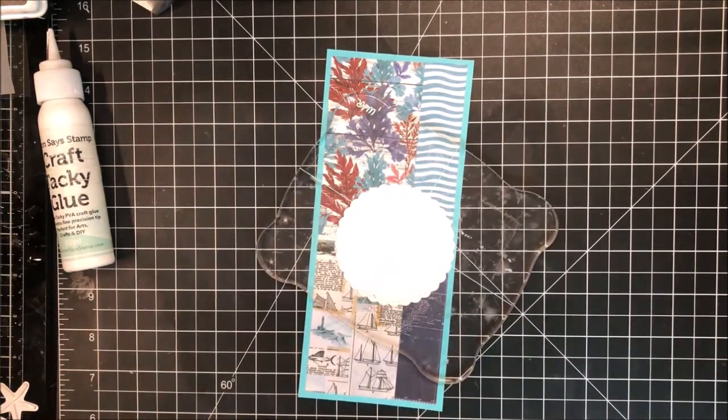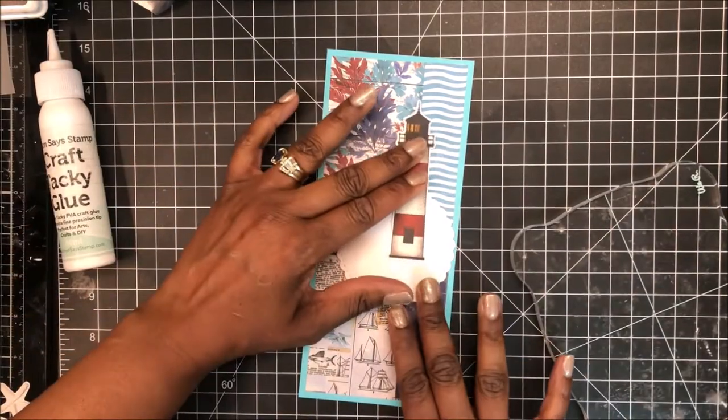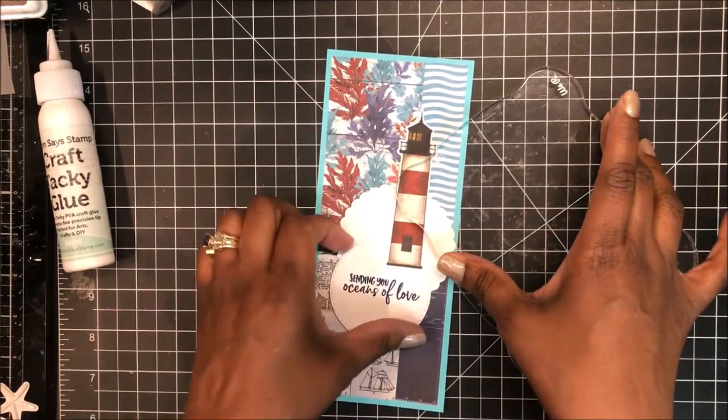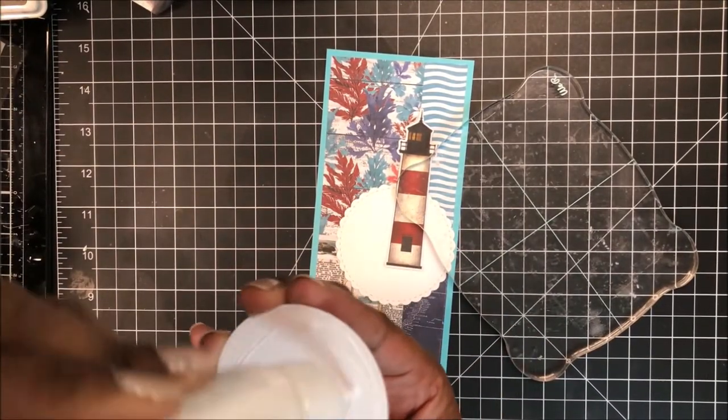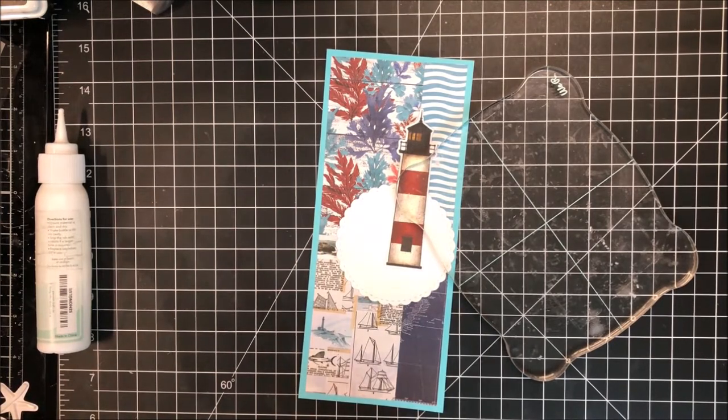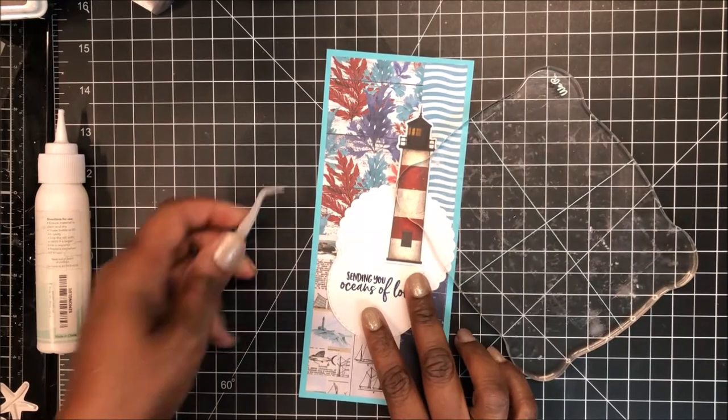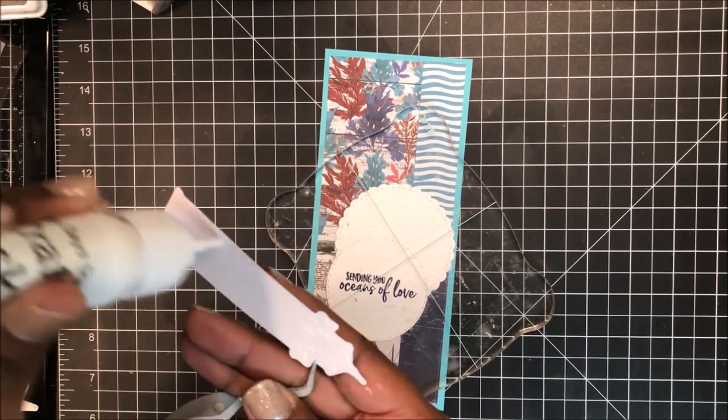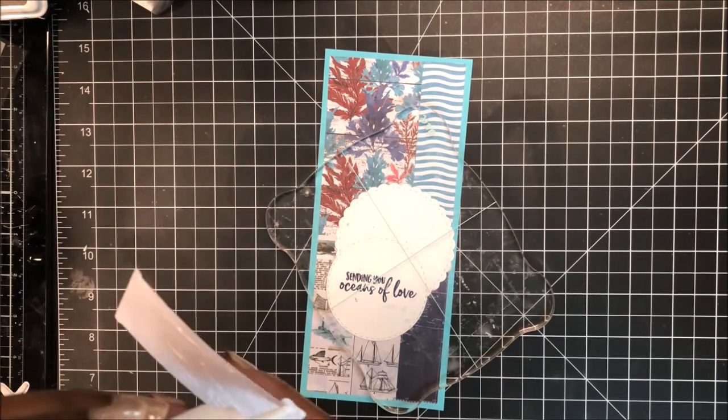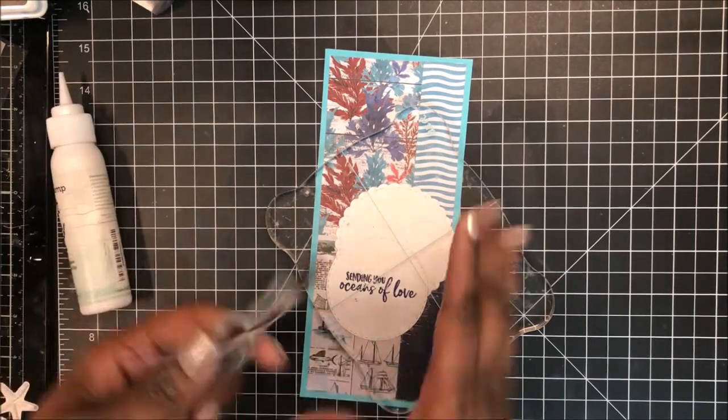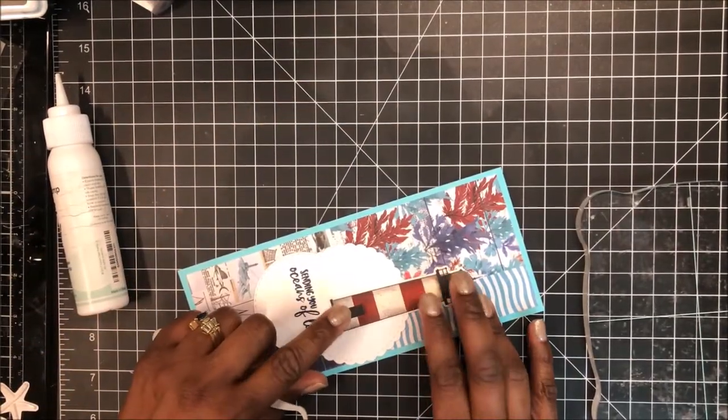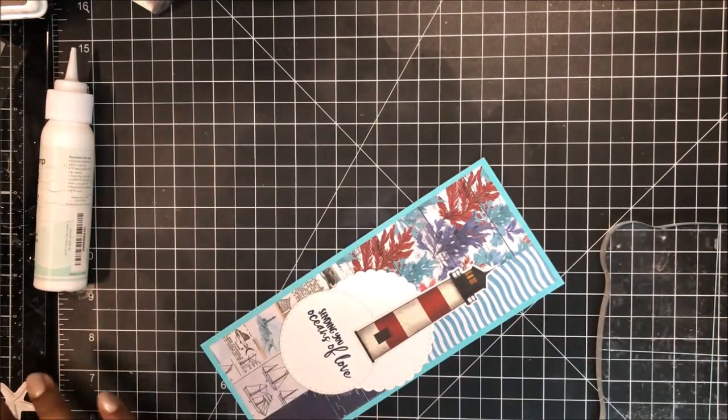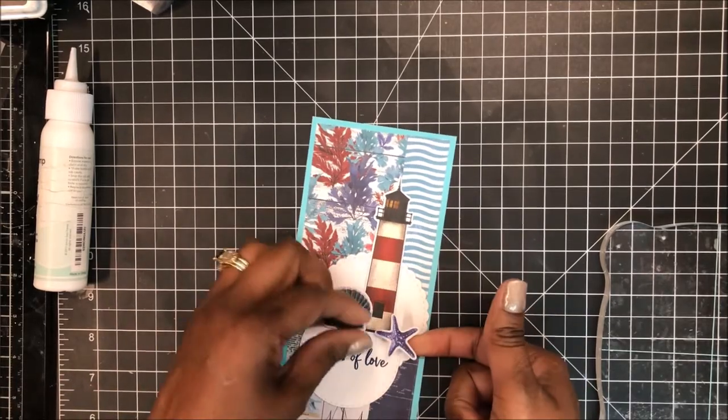And so here I'm bringing in my two and three quarter inch circle and I've glued that to the panel and bringing in one of the lighthouses from the nautical bits and determining where I want to place my second smaller circle that has my sentiment on it. And this sentiment comes from an old hero arts kit. So just using liquid adhesive to secure my or affix my lighthouse. And those are popped up on foam tape.